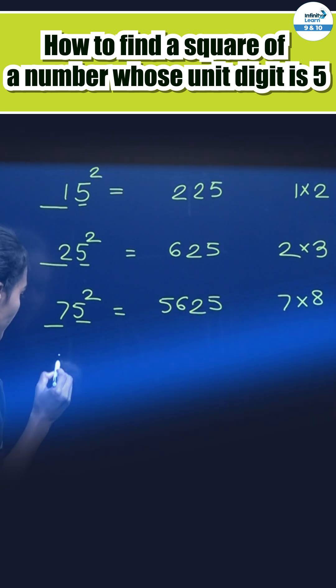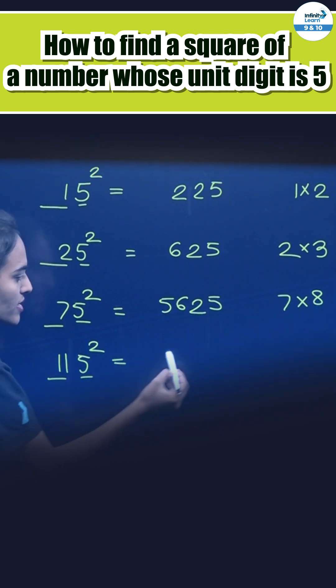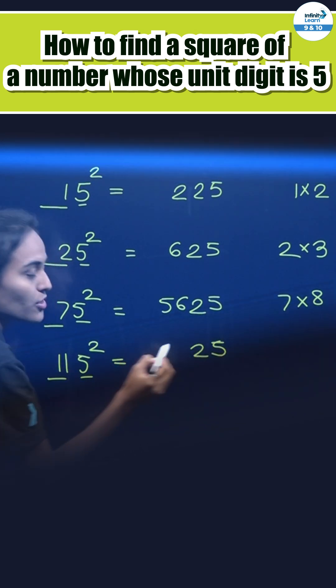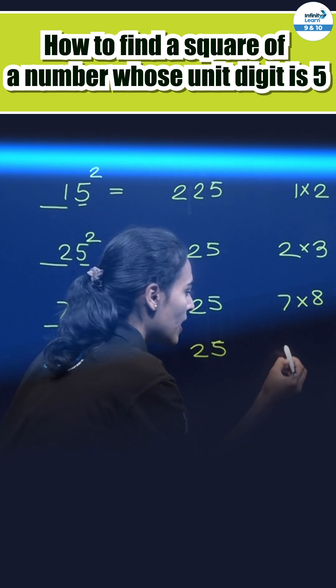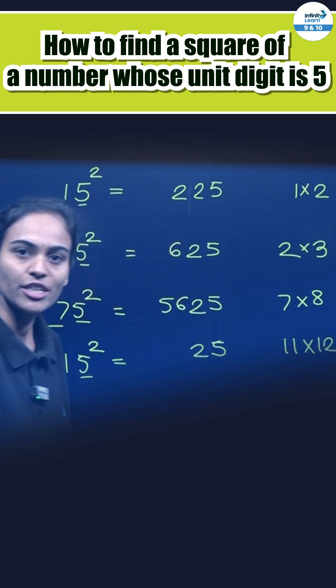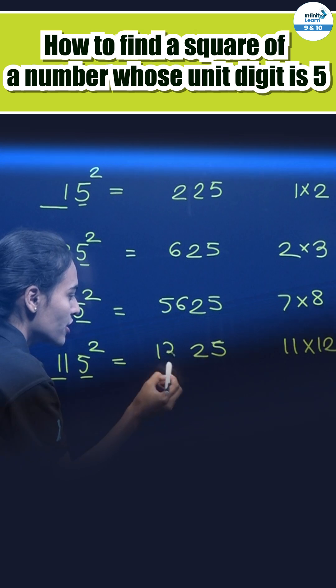Similarly find student, 115 square. First group it, as 5 and remaining number. First write 5 square, that is 25. Then take remaining number, that is 11. Add 1 in it, that is 12. 11 into 12, 132.